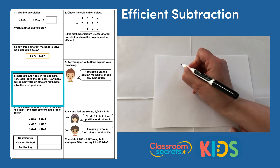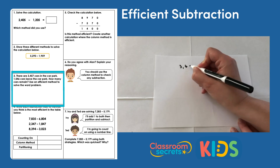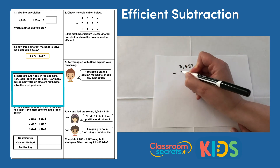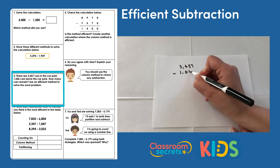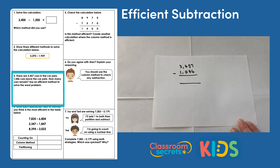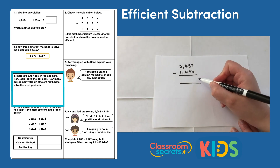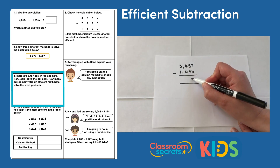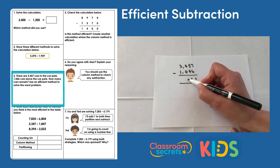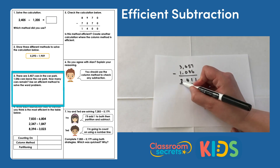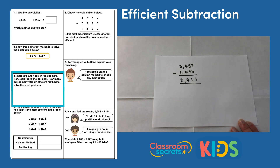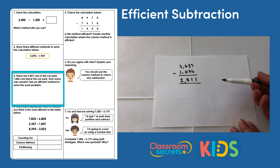Writing out the calculation: 3,457 subtract 1,046. Looking at the numbers, we don't need to perform an exchange, so you could partition, but here's the formal method: seven ones take away six ones is one; fifty take away forty is ten; four hundred take away zero is still four hundred; three thousand take away one thousand is two thousand. The answer is two thousand four hundred and eleven. You might have used a different method — that's fine as long as you got 2,411.